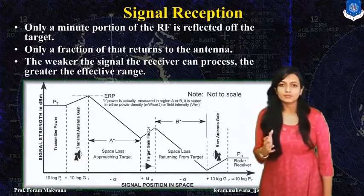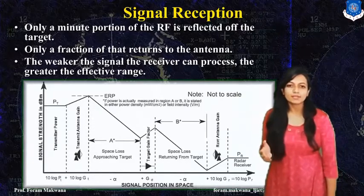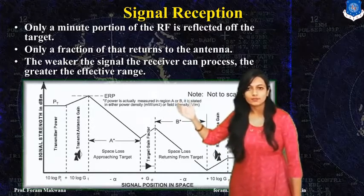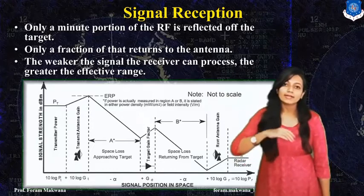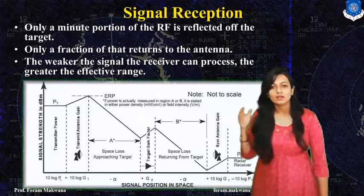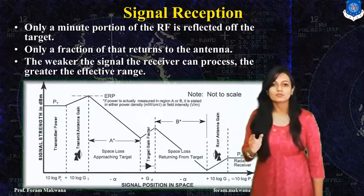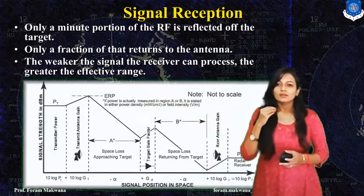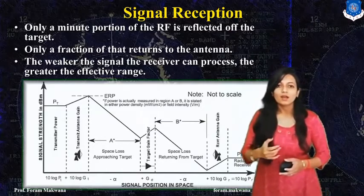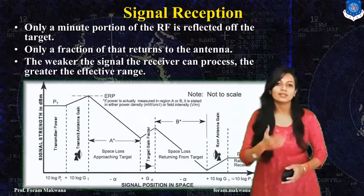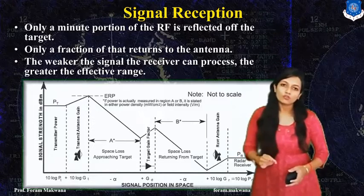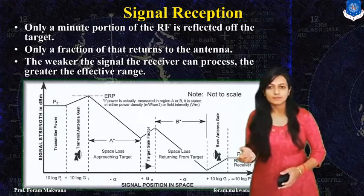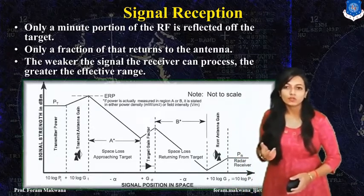For the signal to be received, we must know the three parameters that are going to be considered. The first one is transmitted power, that is P. Transmitted power is directly proportional to the RADAR range — if the range increases, the transmitted power also increases. Second is transmitted antenna gain. The antenna gain is important because how much power is transmitted directly depends on the gain of the antenna. The multiplication of transmitted power and gain is called the Effective Isotropic Radiated Power, which is a product of P and G.